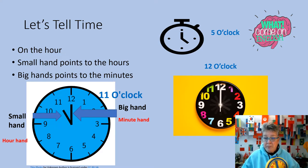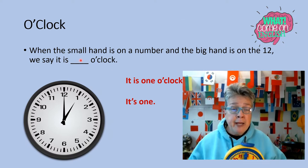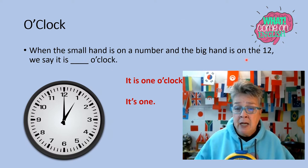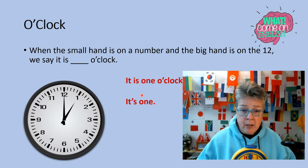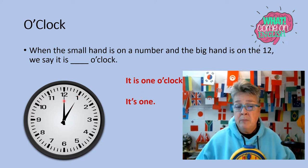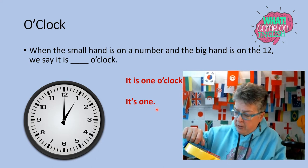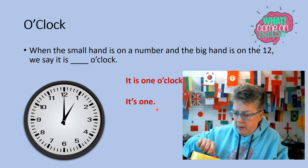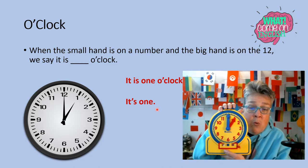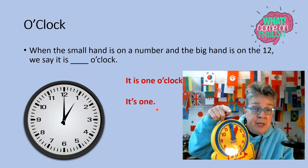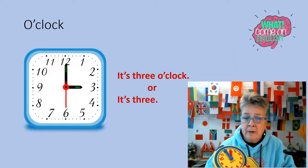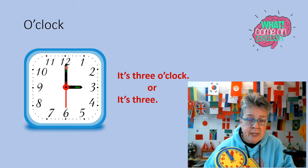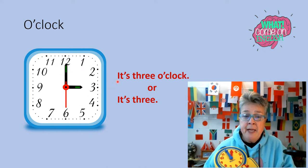When the small hand is on a number and the big hand is on the twelve, we say it is blank o'clock. Right here, it is one o'clock. Small hand's on the one, big hand's on the twelve. It is one o'clock. Or, it's one. Big hand's on the twelve, little hand's on the three — it's three o'clock. Or we could just say, it's three.